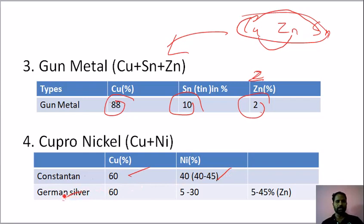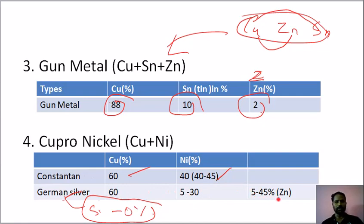German silver — silver is 0% in German silver: 60% copper, 5-30% nickel, 5-45% zinc. Remaining nickel-based alloys: Inconel, Monel — that is nickel-based.